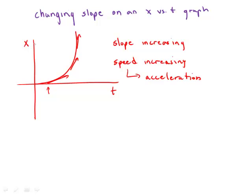So acceleration is represented by a curved line in a position versus time graph, as opposed to constant velocity, which is represented by a straight line.